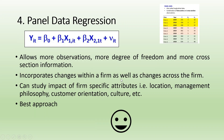The fourth approach — and the most desirable when we have this type of data — is panel data regression. It allows more observations, more degrees of freedom, and more cross-section information. It incorporates changes within a firm as well as changes across firms, and can study the impact of firm-specific attributes such as location, management philosophy, customer orientation, culture, and many others. It is the best approach for analyzing panel data.